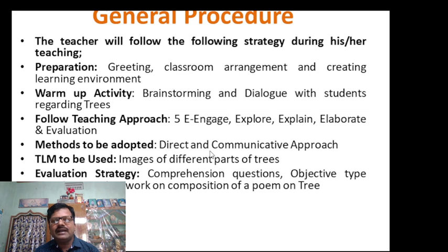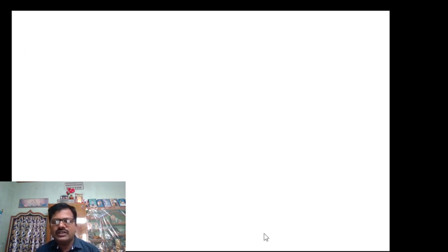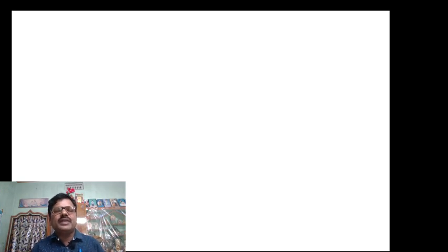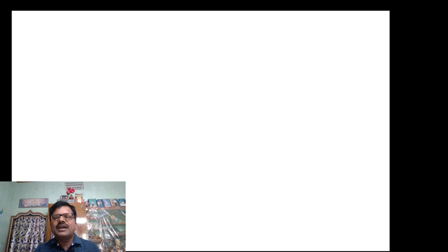The methods to be adapted include direct and communicative approaches. TLM to be used: images of different plants and trees. The evaluation strategy includes comprehension questions, objective-type questions, and project work on composition. When preparing the lesson plan, you have to make columns: steps, teaching points, teacher's activity, students' activity, methods/media/TLM, and blackboard work and evaluation procedure.